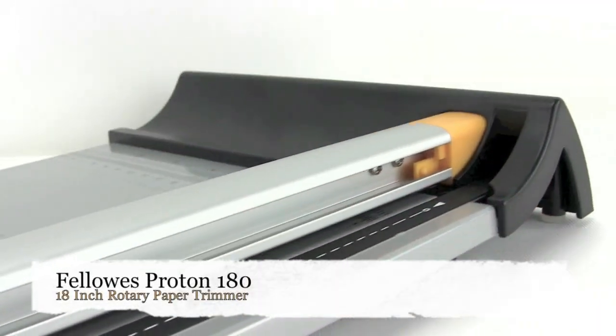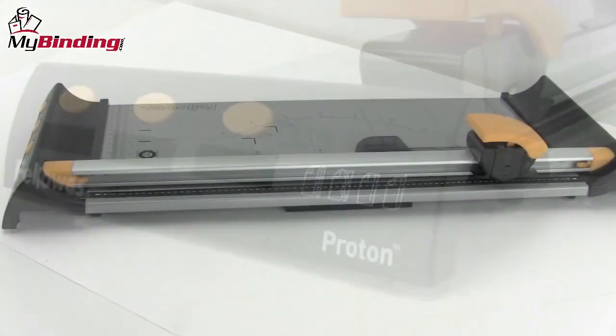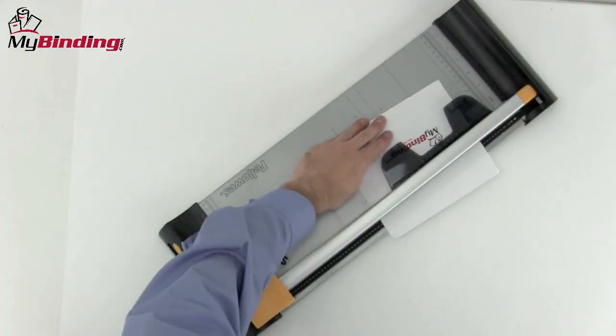Welcome to MyBinding video. This is the Fellowes Proton 180, an 18-inch rotary paper trimmer. Sleek, stylish, and precise, the Proton 180 is great for the home or the small office.